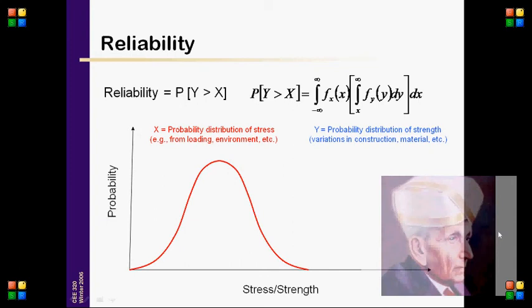Reliability: X equals the probability distribution of stress — for example from loading, environment, etc. Y equals the probability distribution of strength — variations in construction, material, etc. The probability of stress versus strength gives: Reliability equals P(Y greater than X).